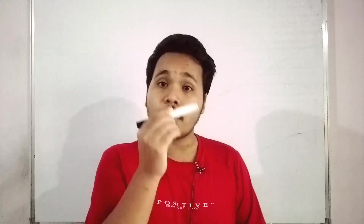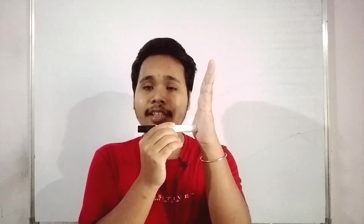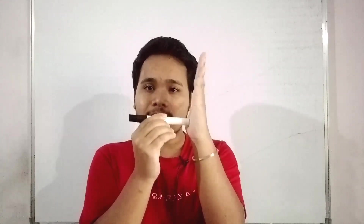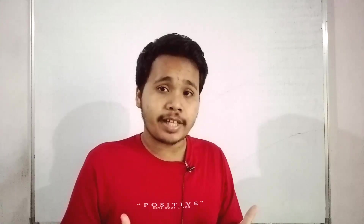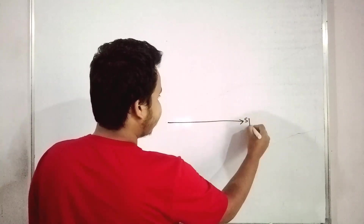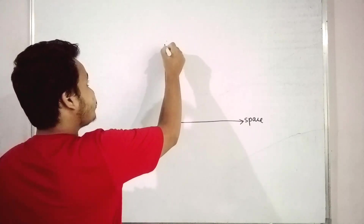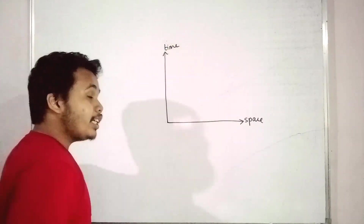I know you are a bit confused, so let me clear it up. Let us consider the horizontal axis as the space axis and the vertical axis as the time axis. If we capture the motion of light — or the propagation of light — and plot it in the form of a graph, we will get something like this diagram.